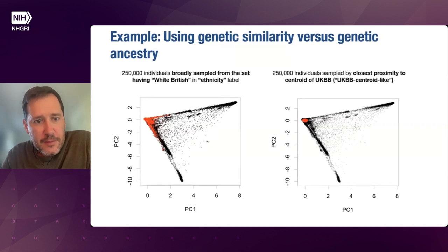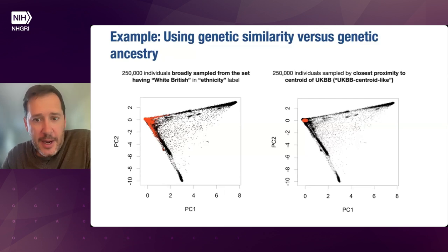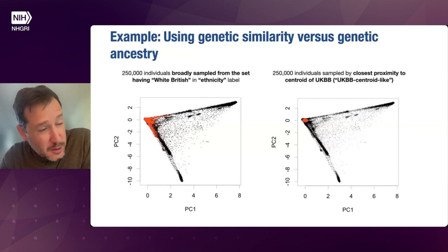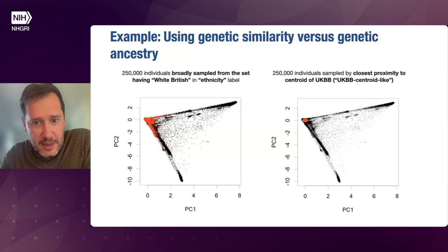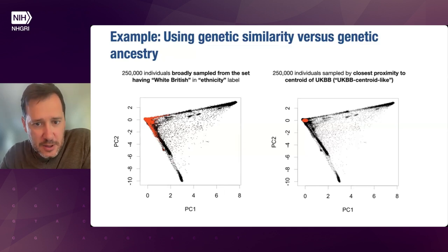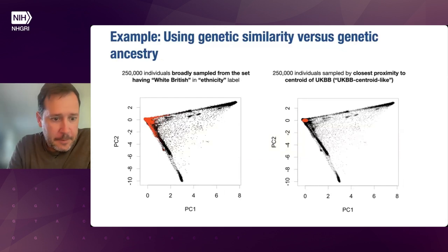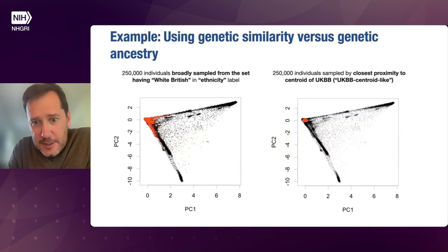That's an example of taking this recommendation and both improving the study and stepping away from using labels that can be confusing to the field. Many GWAS studies using the UK Biobank with the 'white British' label are actually a mashup of the white British ethnicity label and filtering by genetic similarity. The point is that using genetic similarity alone is often sufficient because that's one of the key things being controlled for.